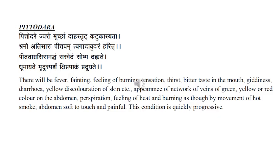Rabdhida pitta jathara — pitta udhre jvaro moorcha, daha sthrit katukasya da. Fever, moorcha or giddiness or fainting, daha or burning sensation, trishna or thirst, katukasyada or bitter taste in the mouth, brahma giddiness, atisara. Peedatvam tvagavudhudhanam — yellow discoloration of skin. Pitta tamra siranatham — the network of veins in the abdomen will be green, yellow, or red in color. Sa svedam — there is perspiration, which is vishesa in pitta even though sweat is generally obstructed in udara. Sa oshma — feeling of heat, dakhyade — feeling of burning and fuming. Mirzusparsham — abdomen is soft to touch. Shiprapagam — quickly progressive; the dhatus attain kshaya quickly in pitta ja udara.